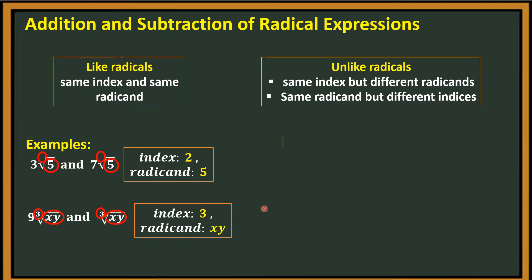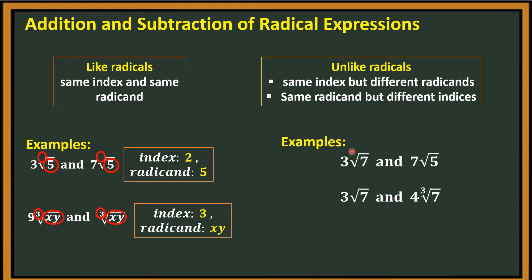Let's go to unlike radicals: 3 square root of 7 and 7 square root of 5. Look at the indices — the index of each is 2, so they have the same index. But look at the radicands: one is 7 and the other is 5. Therefore, they are unlike radicals.